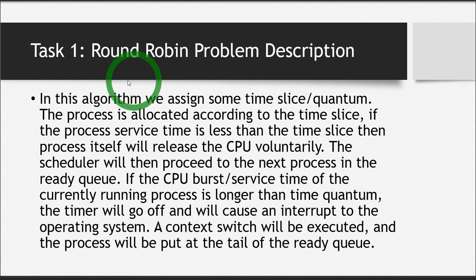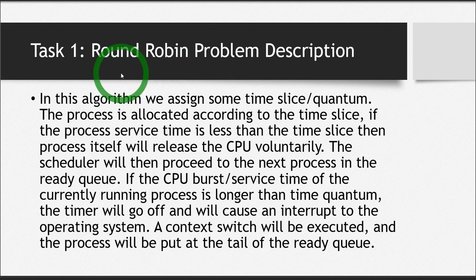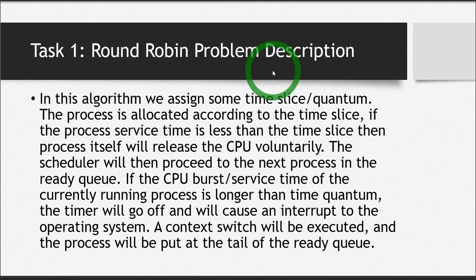The same principle applies to processes. In the round-robin algorithm, every process is given a specific amount of time to use the CPU. If the process finishes within that time, it's done. If not, it goes to the end of the queue and waits for its turn again.